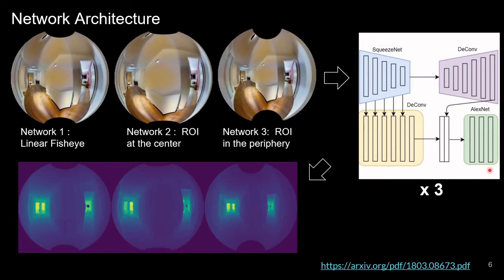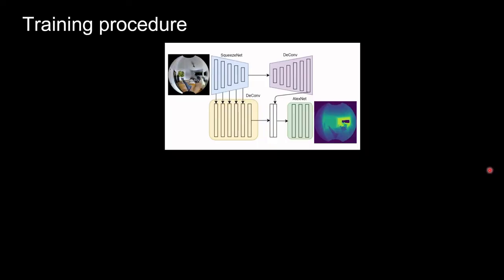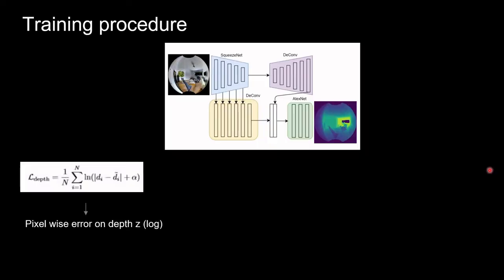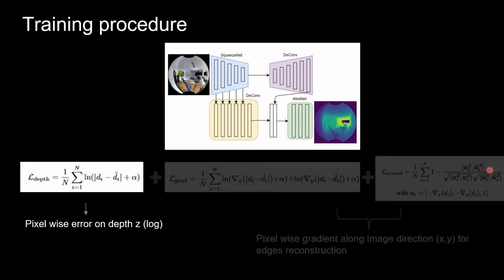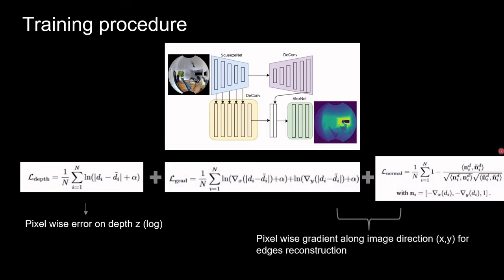For the training, we used weighted sum of three different losses still borrowed from UnDeepVO: a pixel-wise log error on depth to get an accurate depth map, and two losses that evaluate the error along the image direction at different scales for a more accurate edge reconstruction. We used Adam optimizer and trained for 1,200 epochs each network.